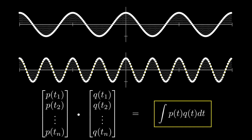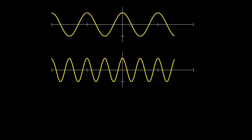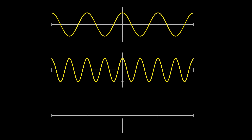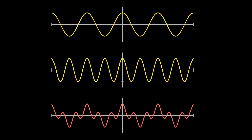If these signals are complex, then this inner product would have the complex conjugate over q — so it would be the integral of p times the complex conjugate of q. In other words, two non-zero signals are said to be orthogonal when the area enclosed by the product of one and the complex conjugate of the other is zero.